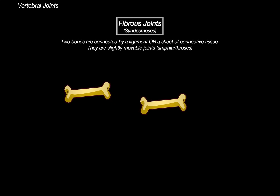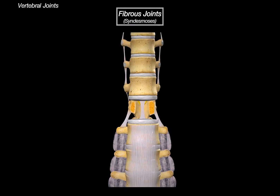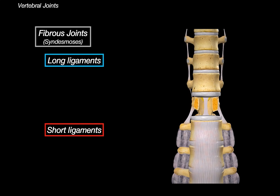Think of two bones held together tightly by a flexible rope — that's basically what fibrous joints are. Looking at the spine, they look different: some are very short and thin, some are short and thicker, and some are very long, spanning the whole spine. Because of this, we can break fibrous joints into two groups: long ligaments, which run along the full length of the vertebral column to limit hyperextension and maintain stability, and short ligaments, which connect adjacent vertebrae to control motion and provide elasticity.